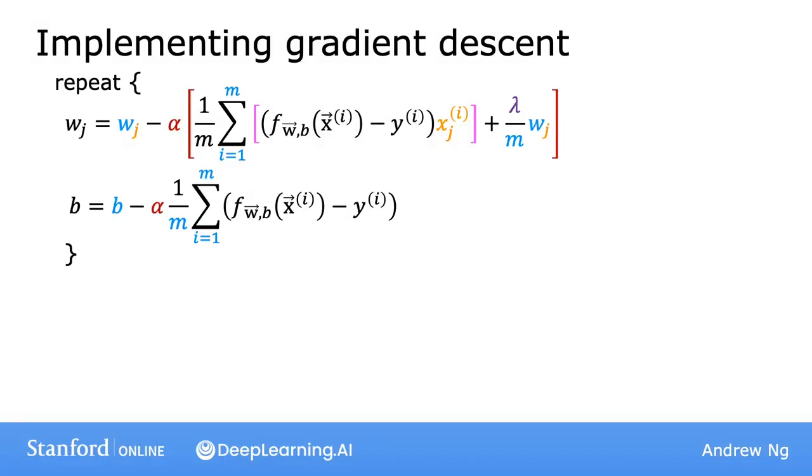So to implement gradient descent for regularized linear regression, this is what you would have your code do. Here's the update for w_j for j equals 1 through n, and here's the update for b. And as usual, please remember to carry out simultaneous updates for all of these parameters.